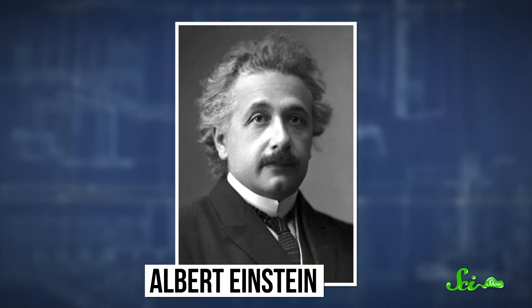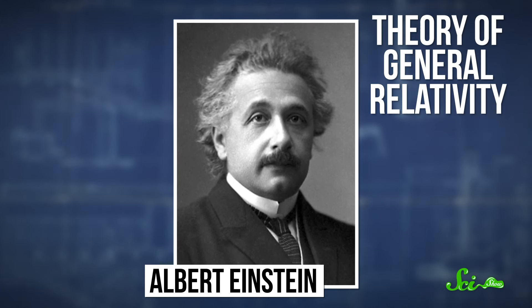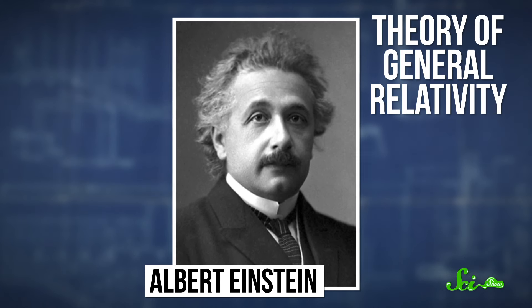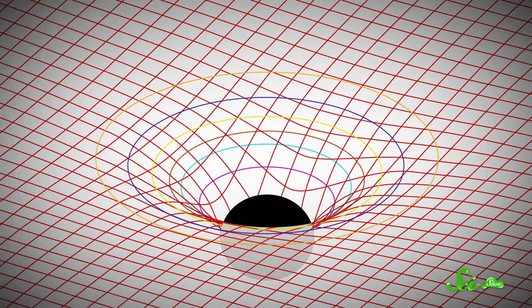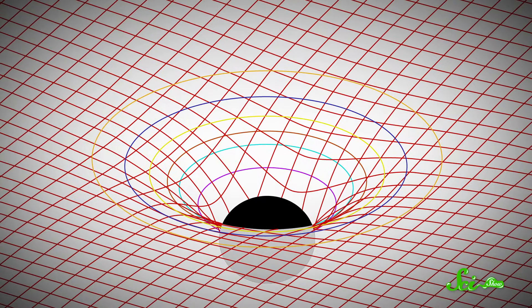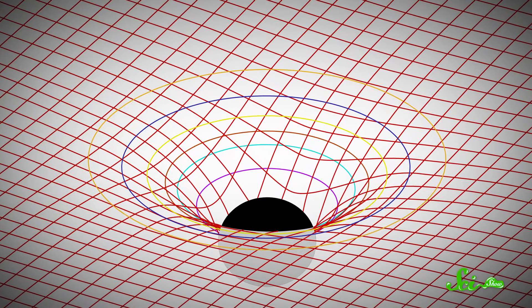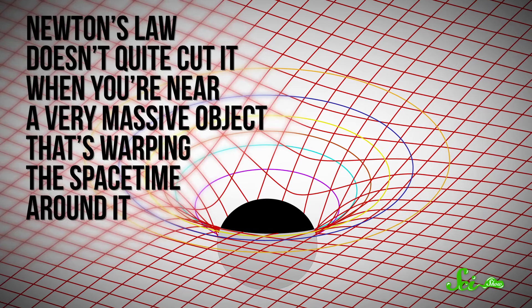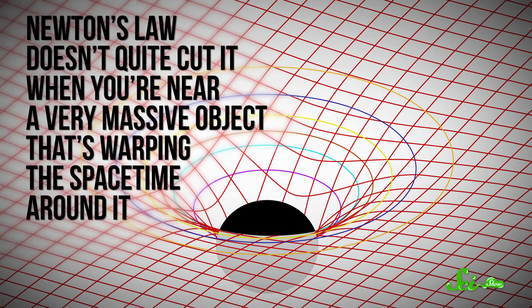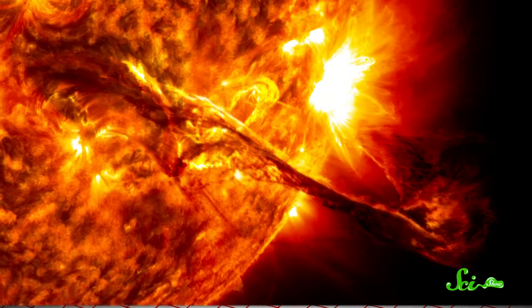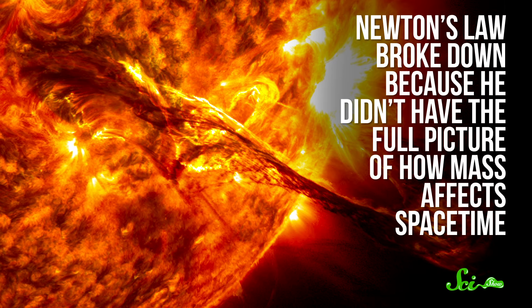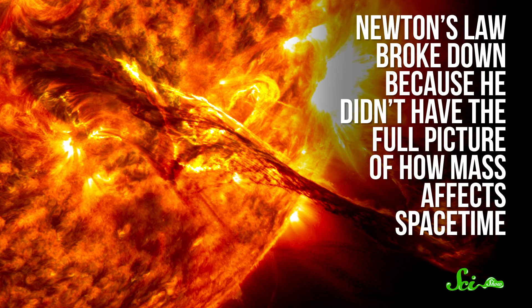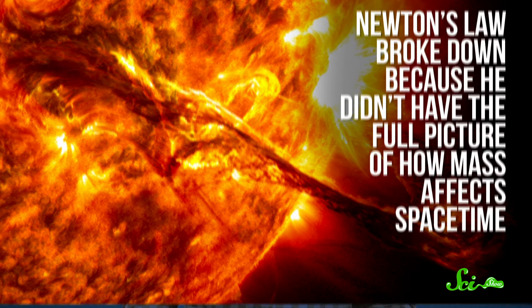Then, in 1915, Albert Einstein came up with his theory of general relativity, which fundamentally changed how we look at our universe. With general relativity, Einstein introduced the idea that mass warps spacetime. And Newton's Law doesn't quite cut it when you're near a very massive object that's warping the spacetime around it. For example, the Sun.